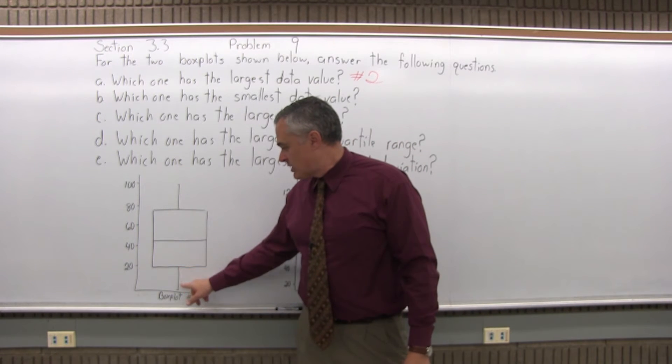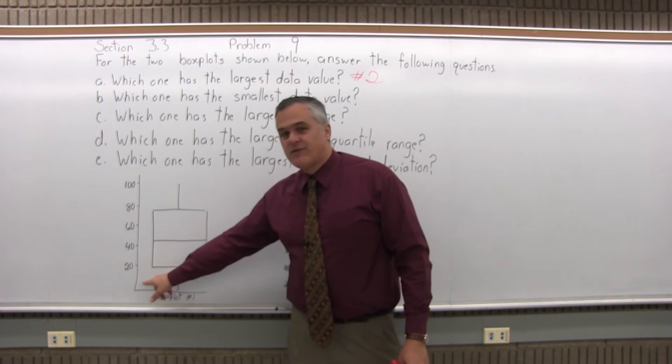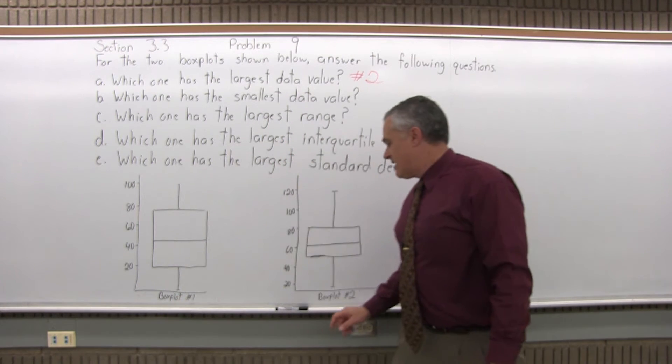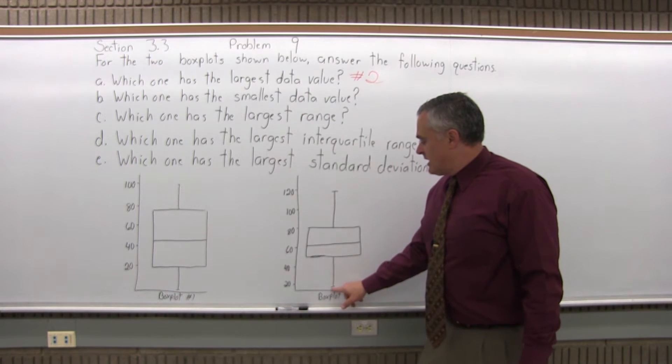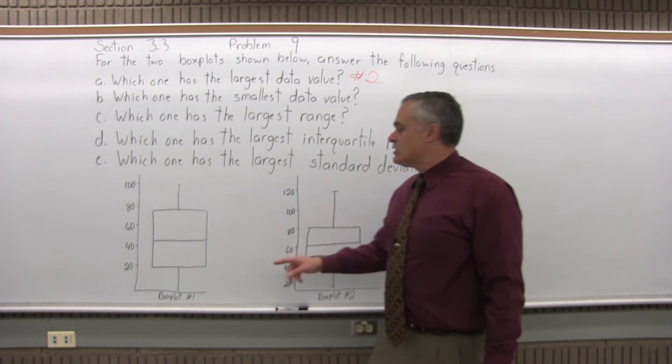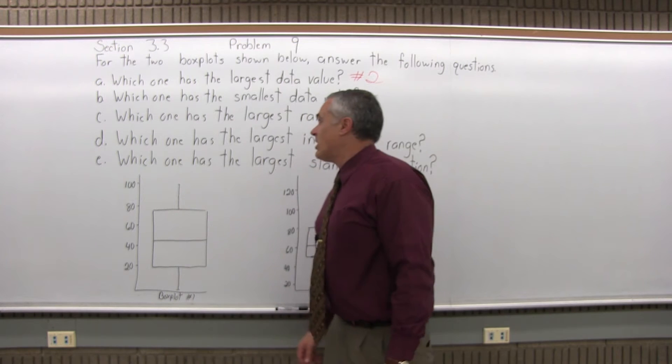And if you look on box plot number one, it looks like it comes fairly close to the zero. And for box plot number two, it goes pretty close to the 20, maybe a tiny bit below. So the smaller data value is in box plot number one.